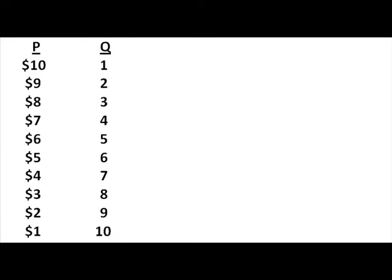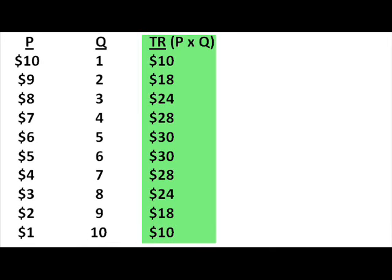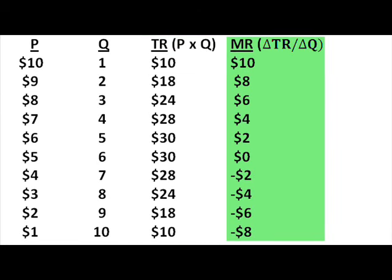As my prices drop, the quantity that I can sell rises. I need to calculate total revenue before I can calculate marginal revenue, which I do by multiplying the price per unit times the number of units. Then, I can address marginal revenue, or the amount of additional revenue I generate by selling another unit. Since I had no revenue when my output was zero, the marginal revenue of my first unit is plus $10. The second unit adds $8 to revenue, the third adds $6, and so on.